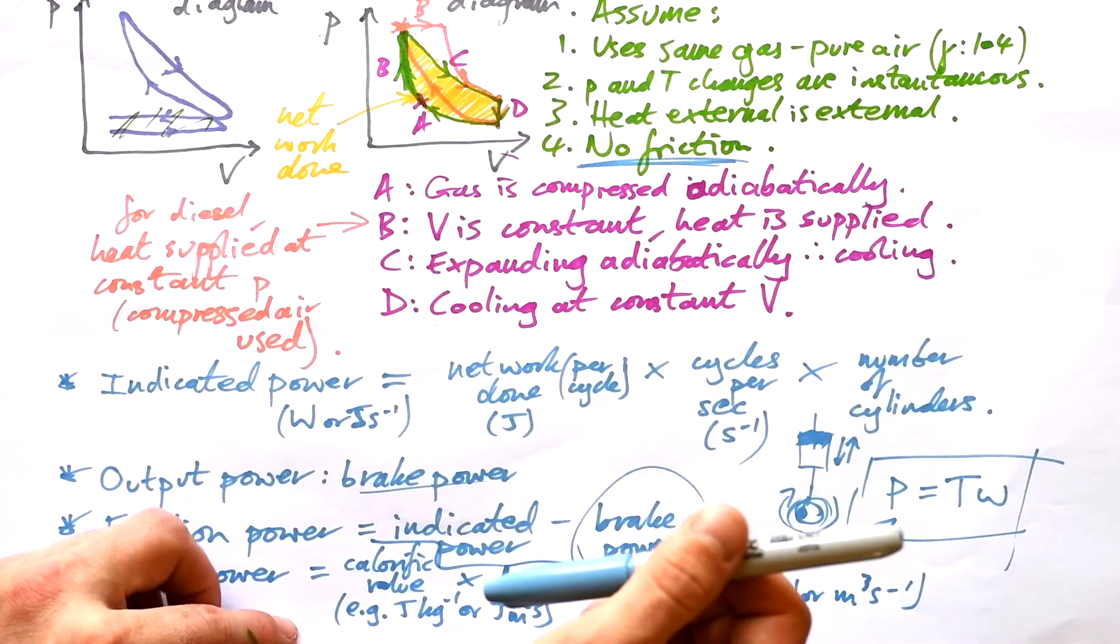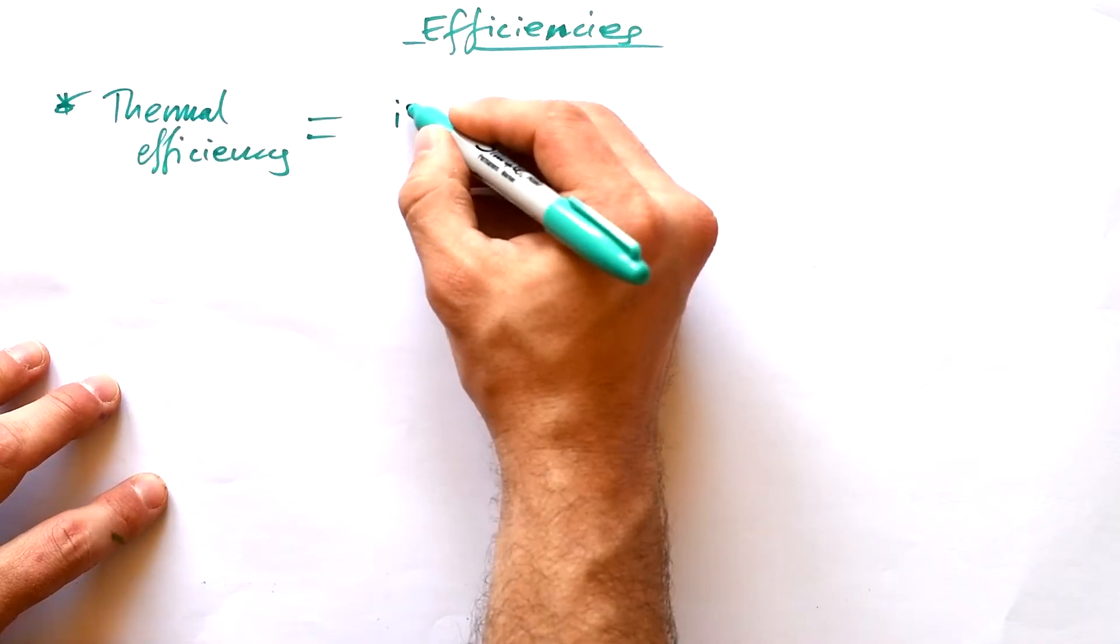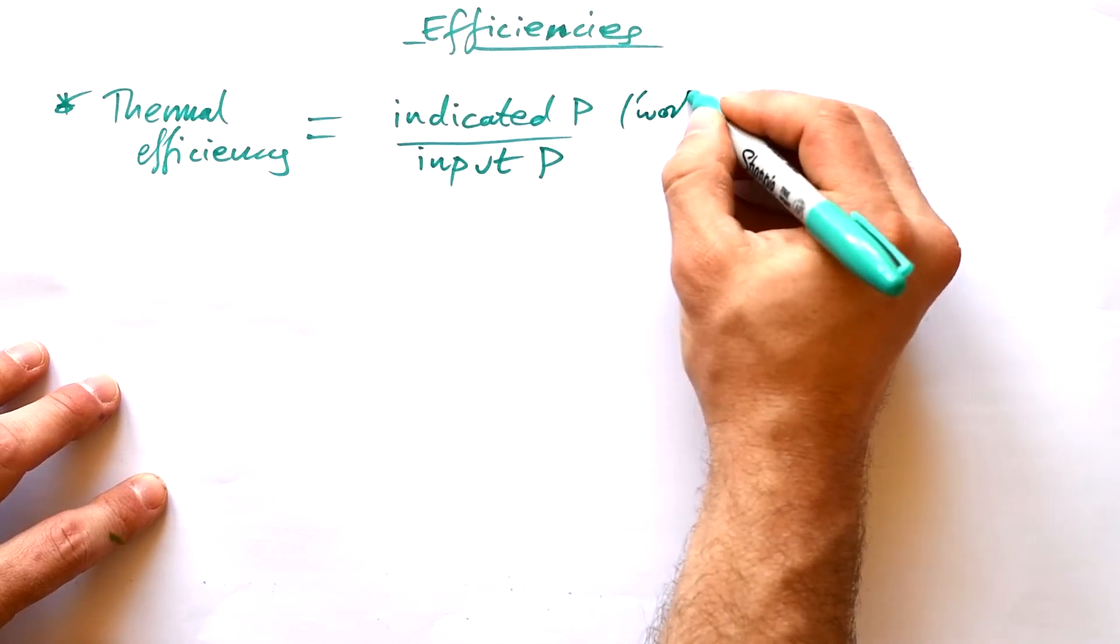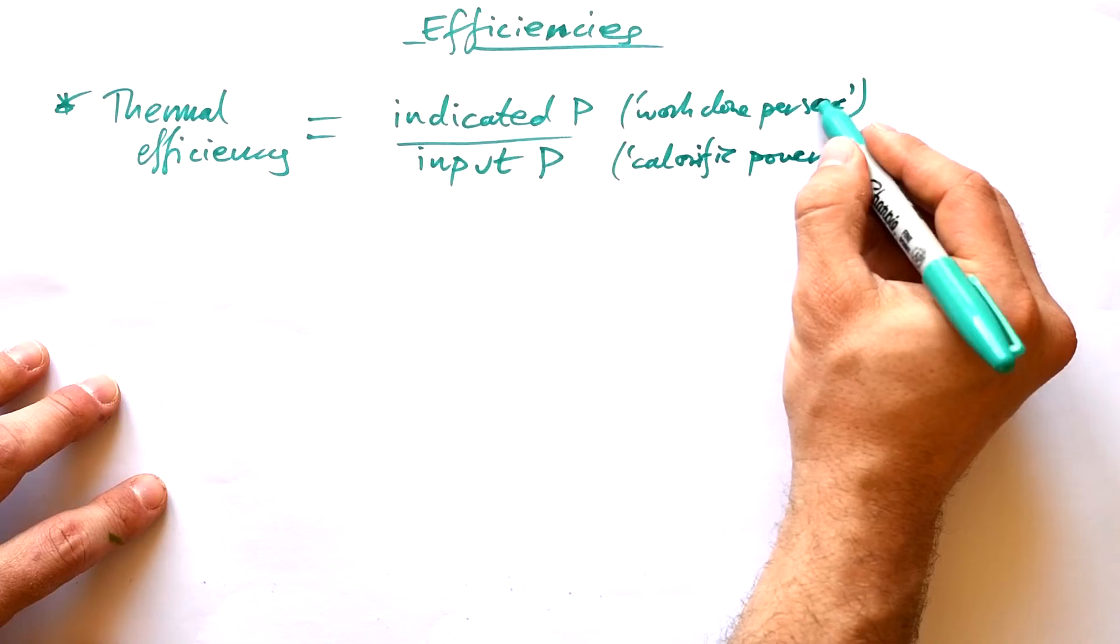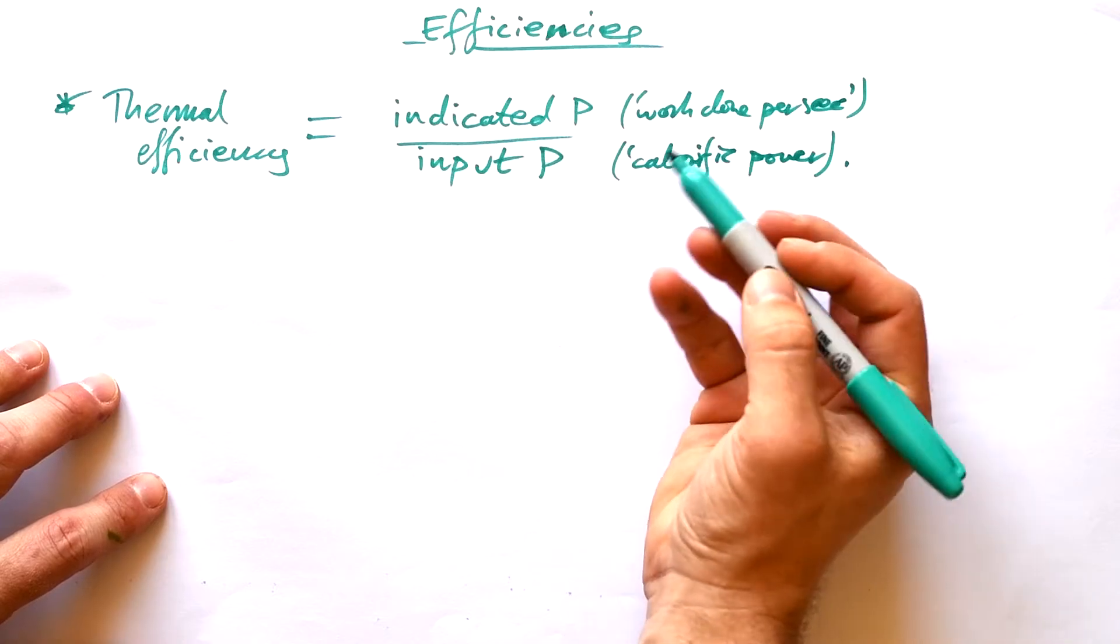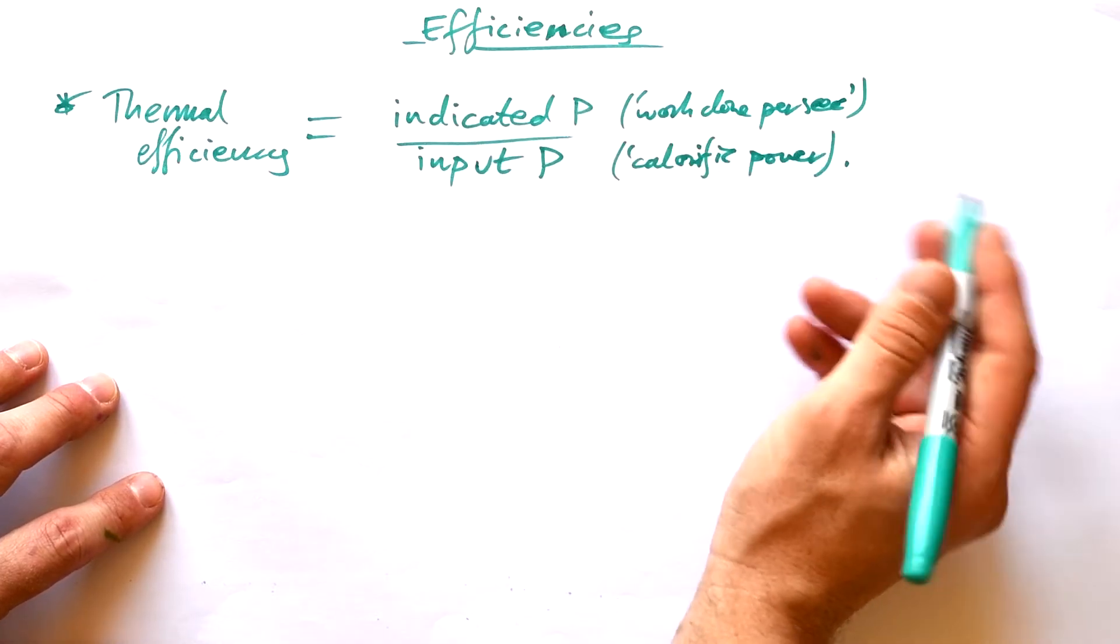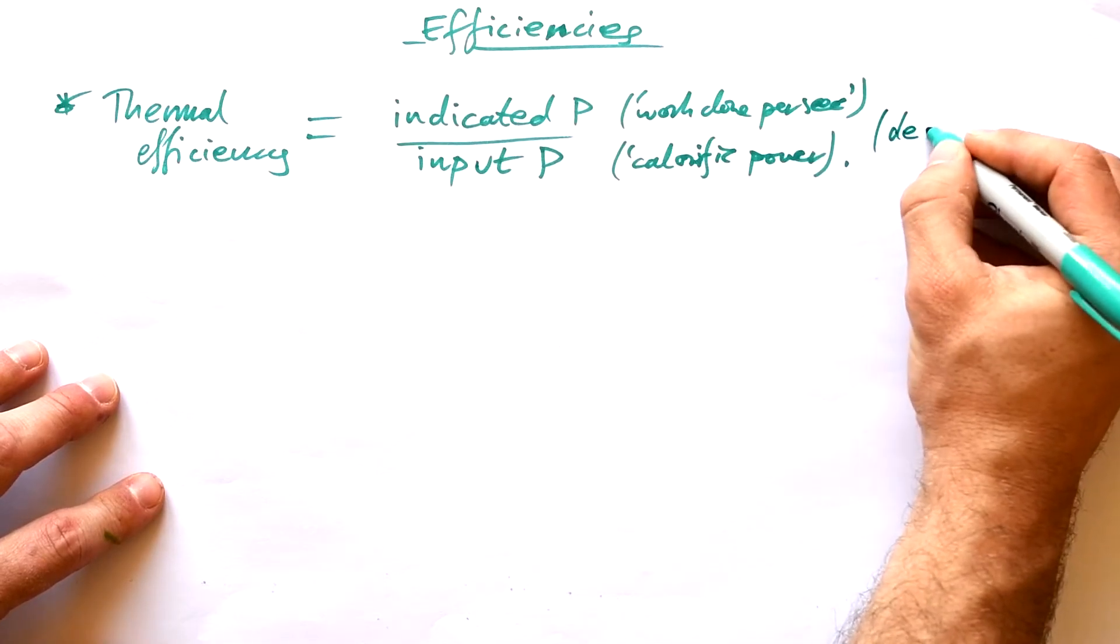Okay, so let's have a look at the different efficiencies that we can calculate for an engine. First one is thermal efficiency, and that's equal to our indicated power divided by our input power. Now, if you remember what we just said, indicated power is work done per second, and input power is our calorific power. So in other words, this is telling us how much of the power that we get from our fuel is actually translated into work done. Now, notice that I haven't put a times 100, because usually we give efficiencies as 50%, 25%, whatever. But when you get into thermodynamics, we give just a decimal.